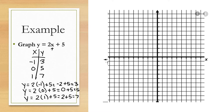I'll go to the graph and plot those 3 points. The point (-1, 3): move left 1 and up 3. The point (0, 5): stay at the origin and go up 5. The point (1, 7): go right 1 and up 7. The highest power of x is 1, so this should graph a line — which it does. I'll connect those 3 points into a straight line and place an arrow on each end to indicate that it continues in both directions.